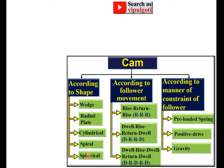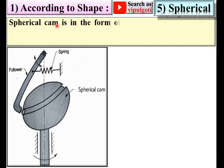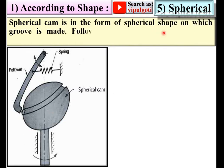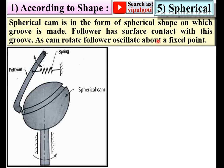Next is the spherical cam. Here you can see a sphere on which a groove is cut, which is why it is called a spherical cam. The follower has surface contact with this groove. As the cam rotates, the follower oscillates about a fixed point.